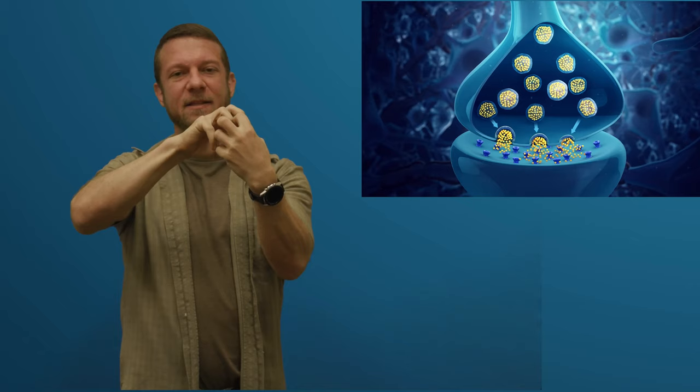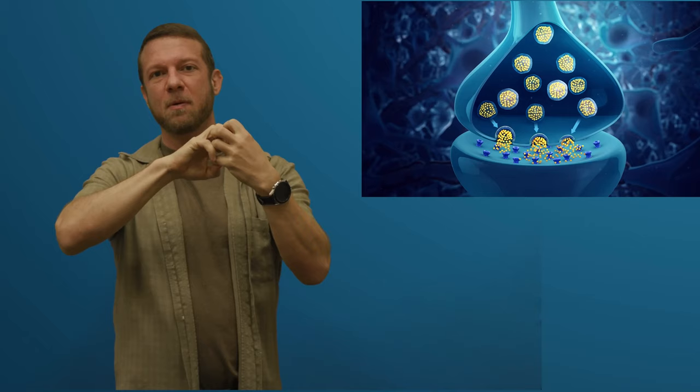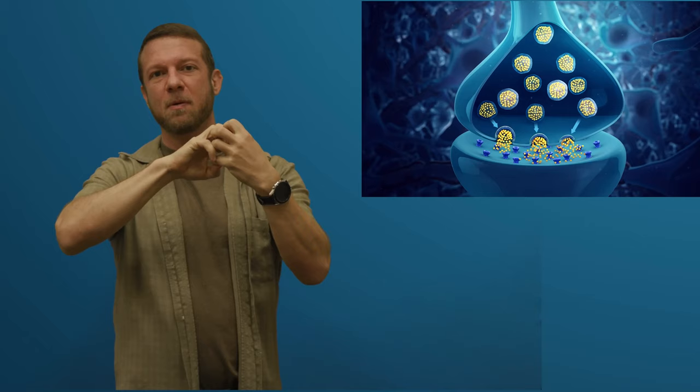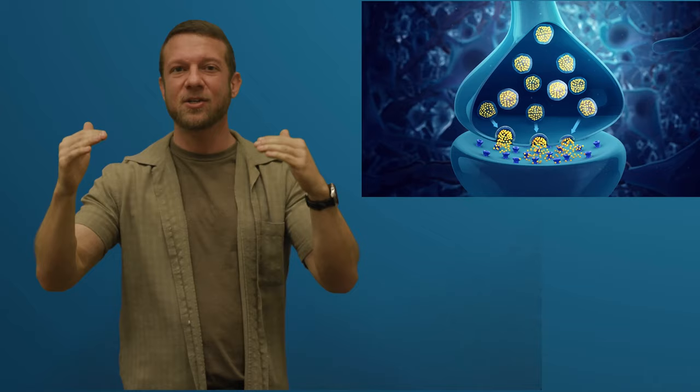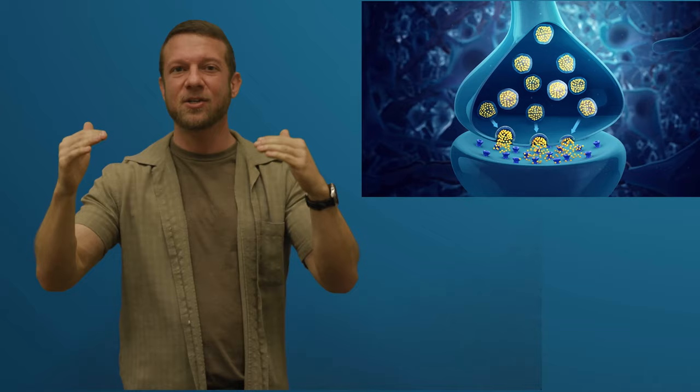The dopamine gets released and then it finds a receptor and binds. That's how your body will detect how much bound dopamine there is and how much free dopamine there is, and that ratio is important. The more dopamine you produce, the more receptor sites are produced and then that ratio gets out of whack and eventually everything balances back out.